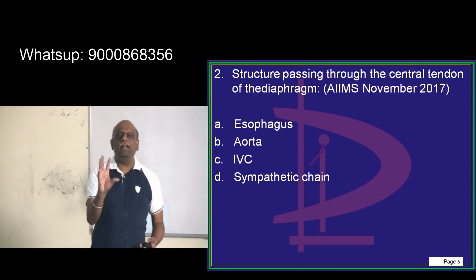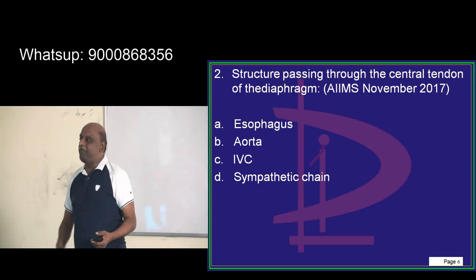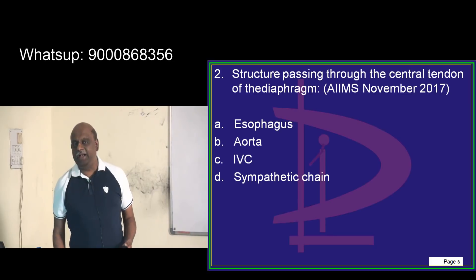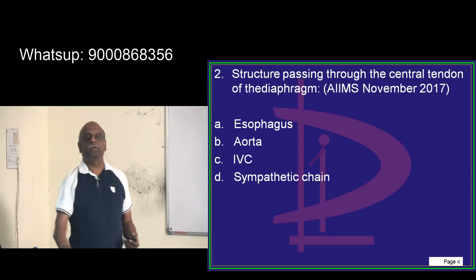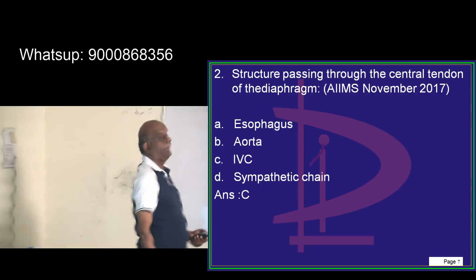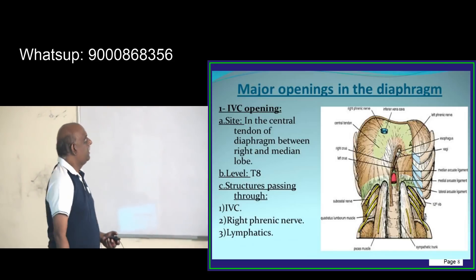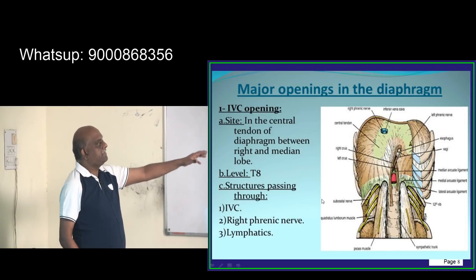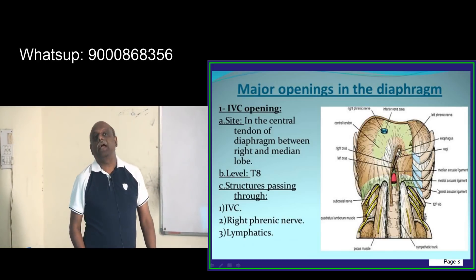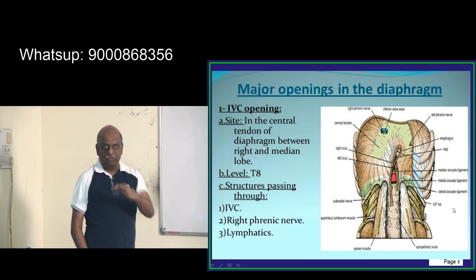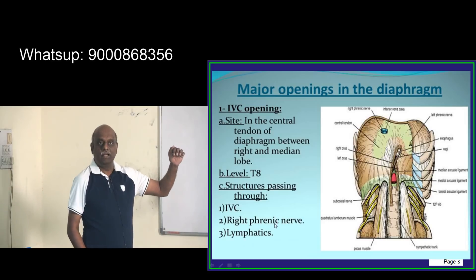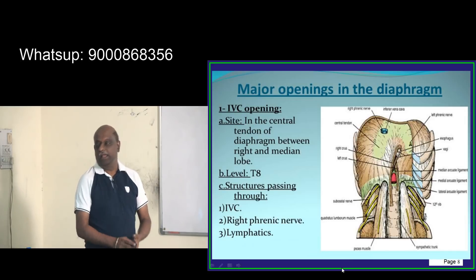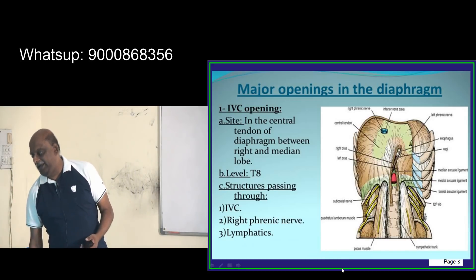The central tendon of the diaphragm and diaphragmatic openings is another high-yield topic. The IVC opening is in the central tendon of the diaphragm, typically at the level of T8, and through it pass the right phrenic nerve, IVC, and lymphatics — this is what you have to emphatically remember.